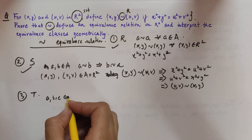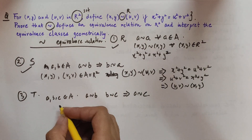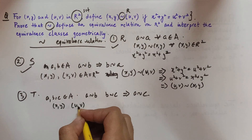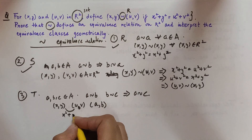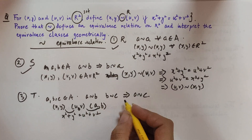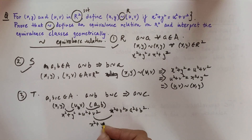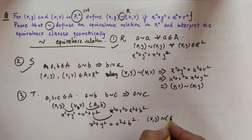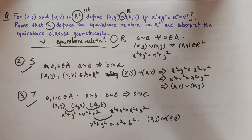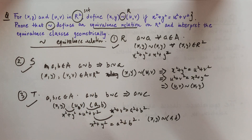For transitive: take three elements (x, y), (u, v), and (a, b). Assume (x, y) ~ (u, v), meaning x² + y² = u² + v². Also assume (u, v) ~ (a, b), meaning u² + v² = a² + b². From both, we get x² + y² = a² + b², which implies (x, y) ~ (a, b). The relation is transitive. Since all three properties hold, this is an equivalence relation. Hence proved.